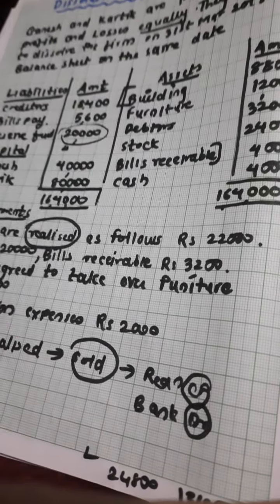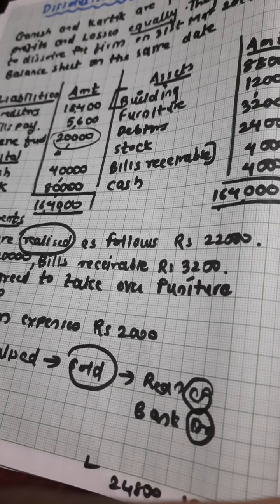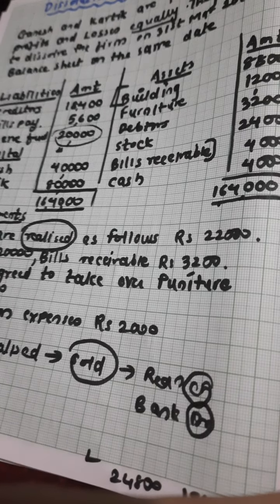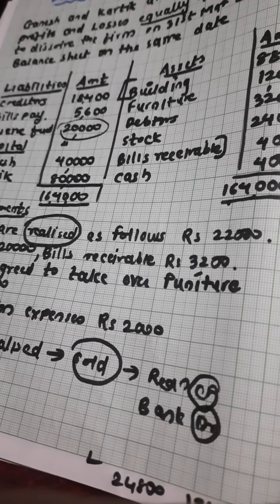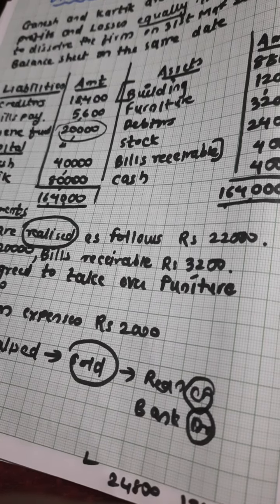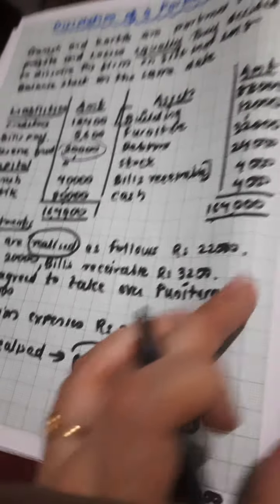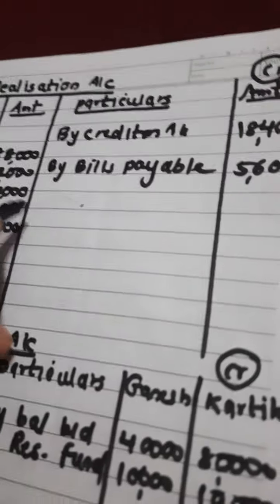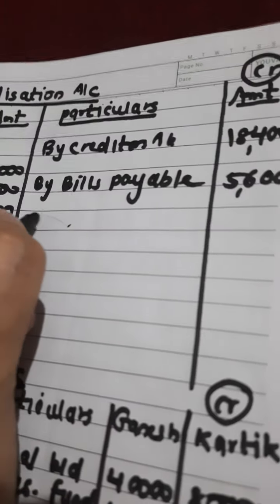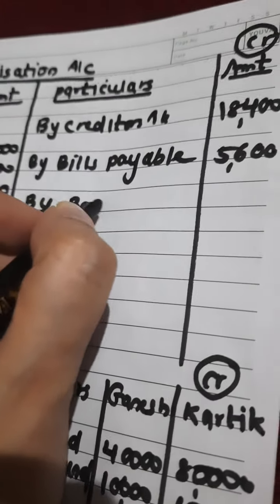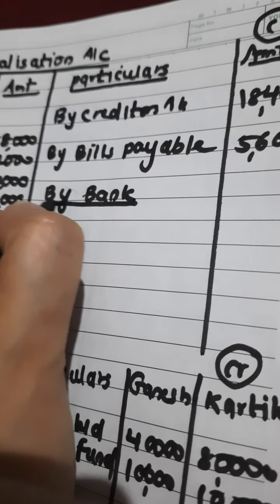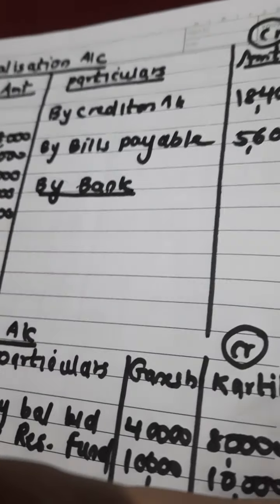This is a full rule to memorize. Learn these effects especially if you are a non-commerce student. Realization credit — so what will be the effect and where to enter? Here. The heading will be 'By Bank.'